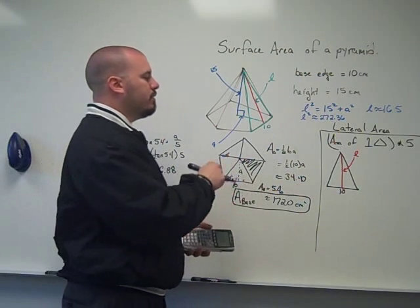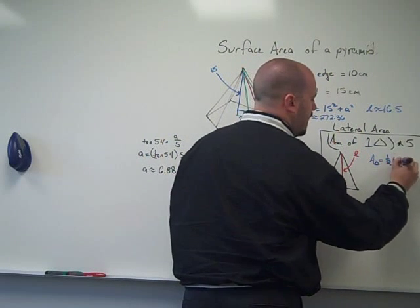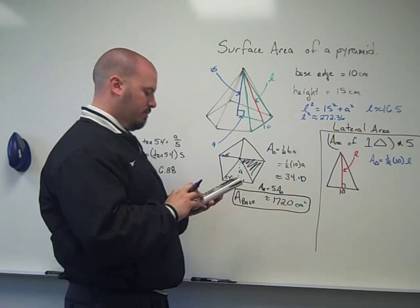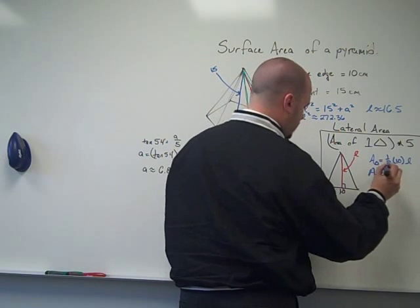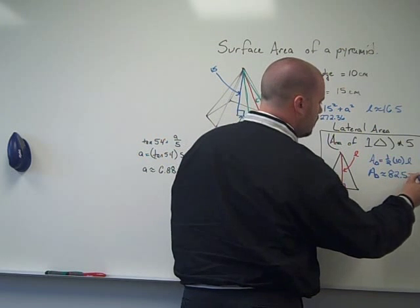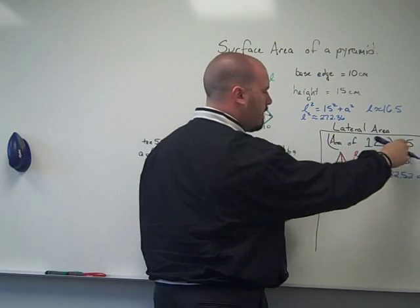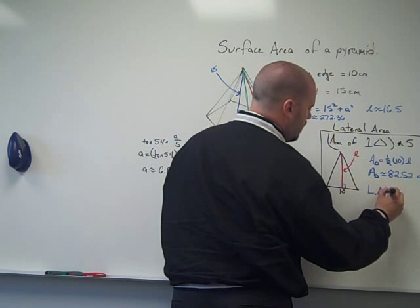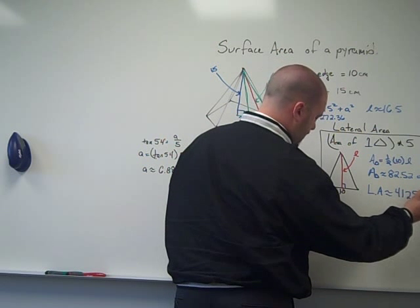And I'm going to leave it stored in my calculator there, because I'm going to use it in my next calculation. The area of the triangle is equal to one half of 10 times the height of the triangle, and this height is L. So I'll take what I've got in my calculator times 5 times 10, and I get the area of one triangle is approximately equal to 82.52 units squared. Now, the lateral area is the area of one triangle times 5, so I'm just going to take what's stored in my calculator and multiply by 5, and I get that the lateral area is approximately equal to 412.58 units.